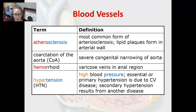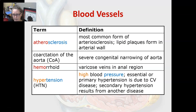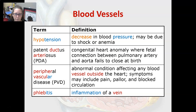Hypertension, abbreviated as HTN, is high blood pressure. Essential or primary hypertension is due to cardiovascular disease; secondary hypertension is due to another underlying disease. Hypotension is a decrease in blood pressure and may be due to shock or anemia.